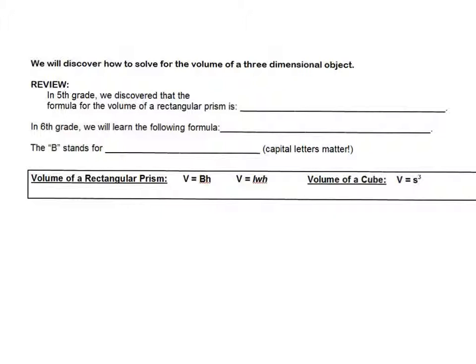In review, in fifth grade we discovered that the formula for the volume of a rectangular prism is length times width times height. And while that is still true, once you get to middle school they start throwing new things in there. So in sixth grade we will learn the following formula: